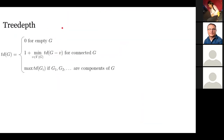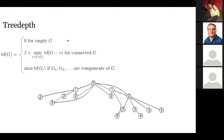I will talk about a few choices of parametrization. First, tree depth: to define it, consider a process where in every round you can remove a vertex from every connected component of the graph. Tree depth is the minimal number of rounds needed to delete all vertices. Equivalently, tree depth is the minimal depth of an elimination forest, where each node corresponds to a vertex of the graph and adjacent vertices must be in an ancestor-descendant relation.